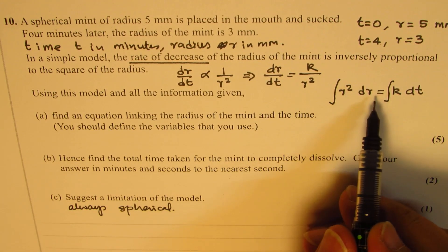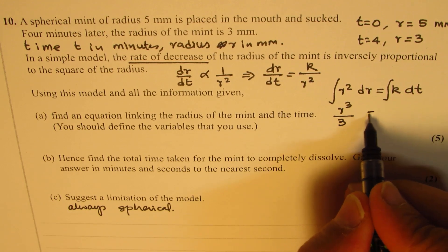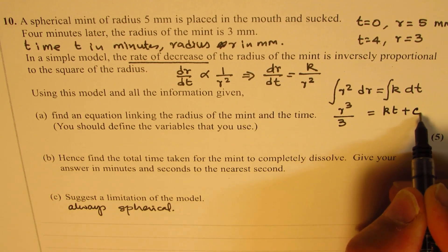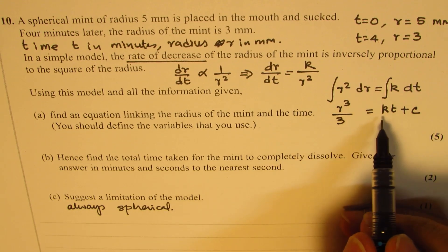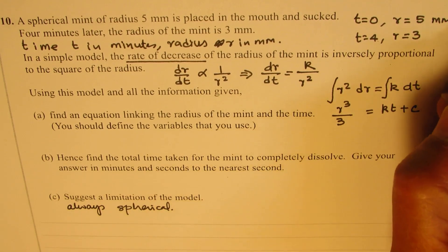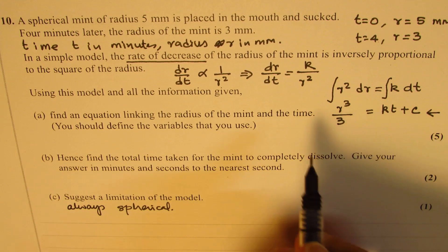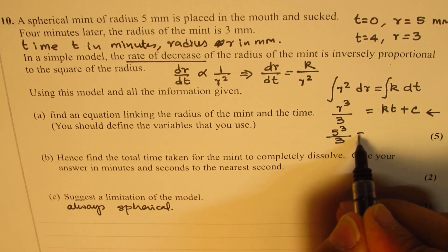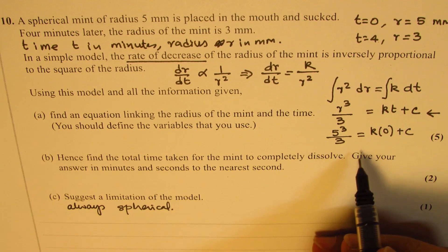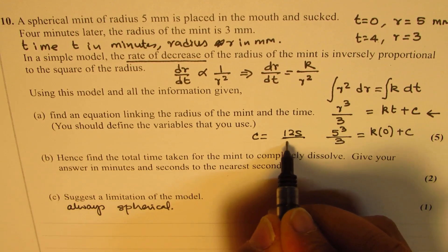When you integrate r² dr, you get r³ over 3. On the right side, integrating k with respect to t gives kt plus c. Now we can find the value of c using the first condition: at t equals 0 and r equals 5. So we have 5³ over 3 equals k times 0 plus c, which gives c equals 5³ over 3, that is 125 over 3.